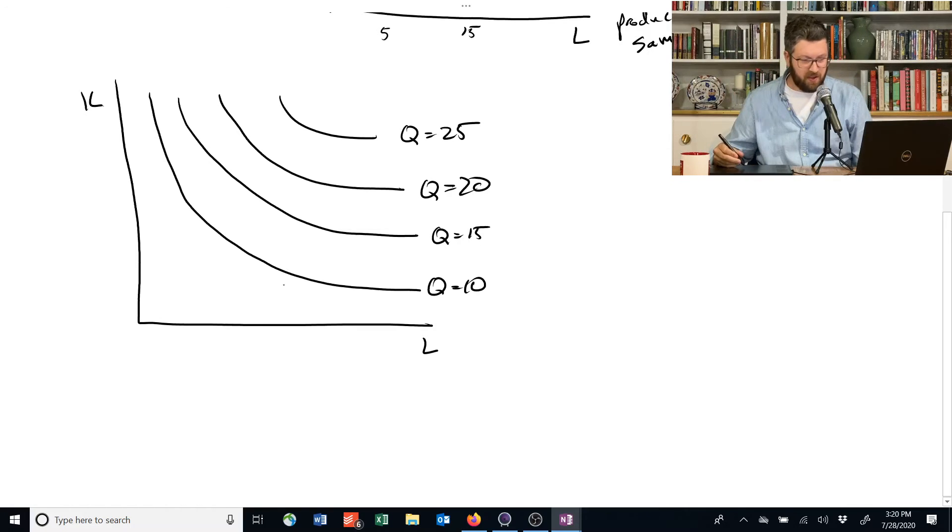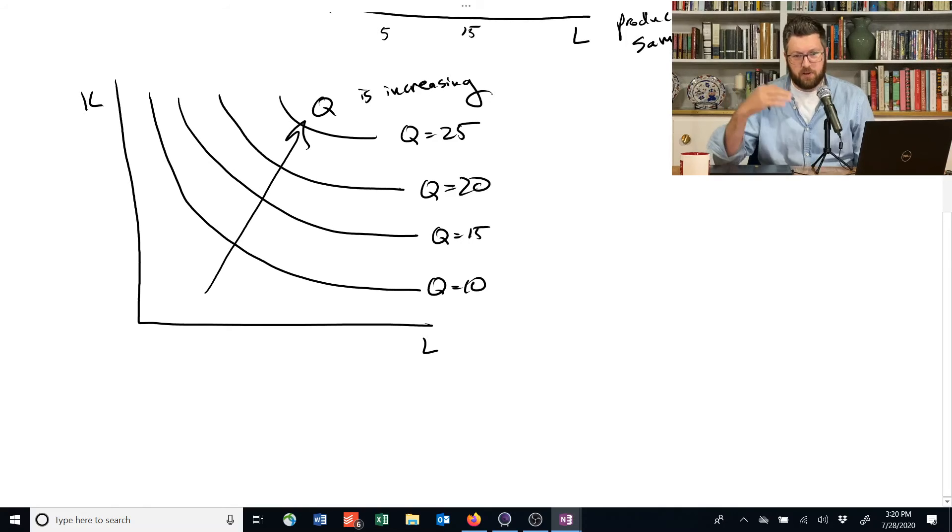The important thing is that Q is increasing as we go up and to the right. Because as we go up and to the right, we're giving more and more inputs to the production of this output. And in general, we assume that if you increase the quantity of inputs and outputs, you're going to be able to get more bang for your buck, or you're going to be able to get more output out.